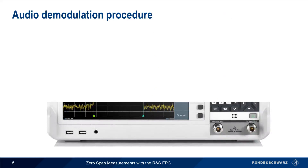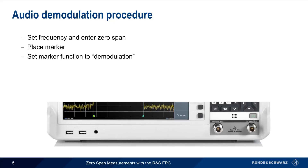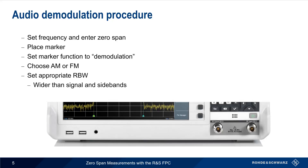Let's review the procedure for demodulating audio on a spectrum analyzer. We first set our frequency and enter zero-span mode. Then we place a marker on the signal of interest, change the marker function to demodulation, choose AM or FM, and select an appropriate resolution bandwidth. Remember that in order to avoid distorted audio, the chosen resolution bandwidth needs to be wider than the signal and any sidebands. The FPC has both a headphone jack as well as a built-in speaker for listening to the demodulated audio.